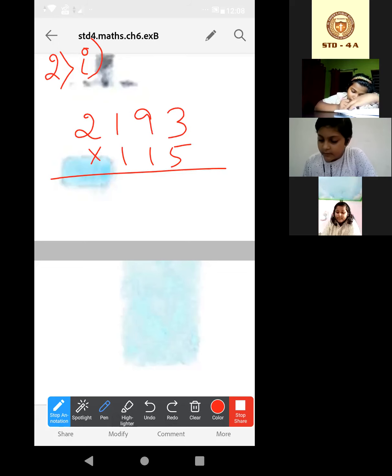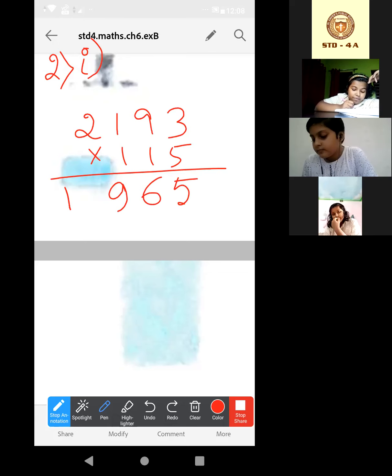Now, 3 times 5 is 15, carry 1. Now, 5 times 9 is 45, plus this 1 is 46, again carry 4. 5 times 1 is 5, plus this 4, that will be 9. 5 times 2 is 10.